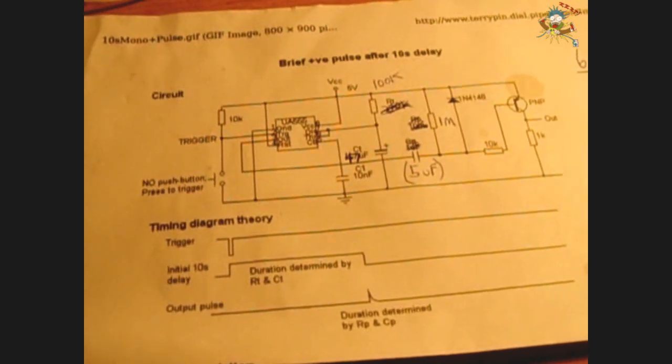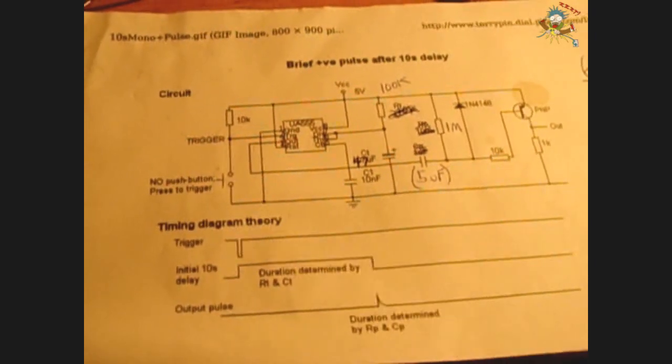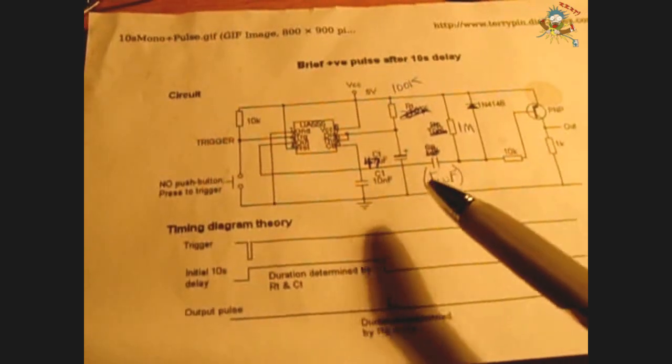If you replace the regular 555 with a CMOS 555, you can get that standby current down way lower than 6 milliamps. The circuit does not get much easier than you see here. I made a bunch of modifications from the original.